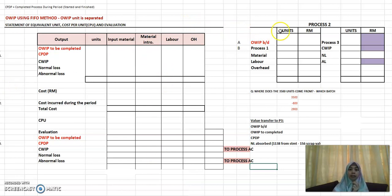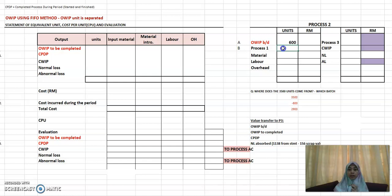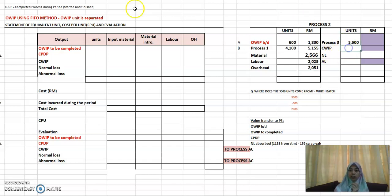First, you need to prepare the process account. Preparing the process account is the same as what we have done before in terms of the quantity — there is no difference. For the opening WIP, that is 600, and then plus other items from process one: 4,100. Put in the value — the value is 1,830 — and put in all the inputs. The quantity remains the same as what you have done for your weighted average. The output to process three is 3,500. Your closing WIP is 800. Your normal loss determined in terms of quantity is 390 and your abnormal loss is 10.